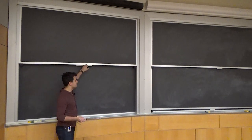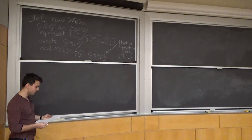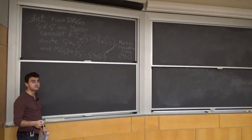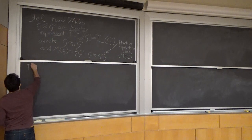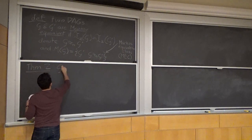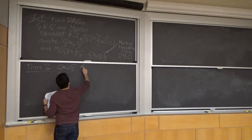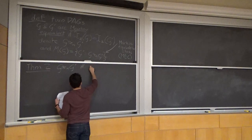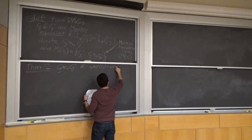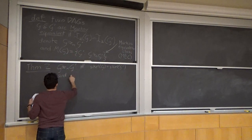The theorem we want to prove is: G is Markov equivalent to G′ if and only if they have the same skeleton and the same unshielded colliders. This is a necessary and sufficient condition.